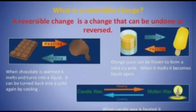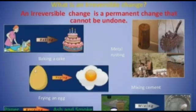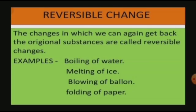The changes that can occur in a forward and reverse direction repeatedly are called reversible changes. The changes that can never occur back in a reverse direction again are called irreversible changes. Examples of reversible changes: boiling of water, melting of ice, blowing of a balloon, and folding of paper.